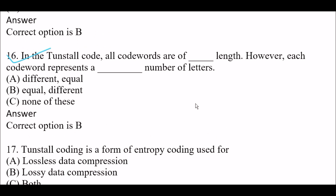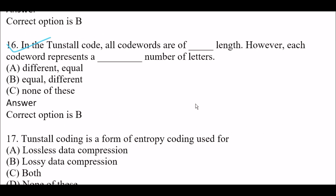Next question: In the Tunstall code, all code words are of blank length; however, each code word represents a blank number of letters. Option A: different and equal respectively. Option B: equal and different respectively. Option C: none of these. The right answer is Option B, equal and different. In the Tunstall code, all code words are of equal length; however, each code word represents a different number of letters.